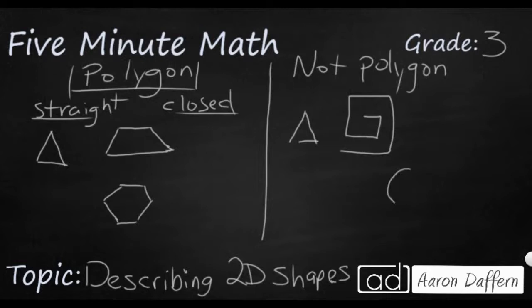A circle is one we use a lot that is not a polygon. A circle is not a polygon — it is closed, but it does not have straight sides. Neither is a crescent, sometimes called a crescent moon. That is not a polygon. Even though it is closed, it does not have straight sides.